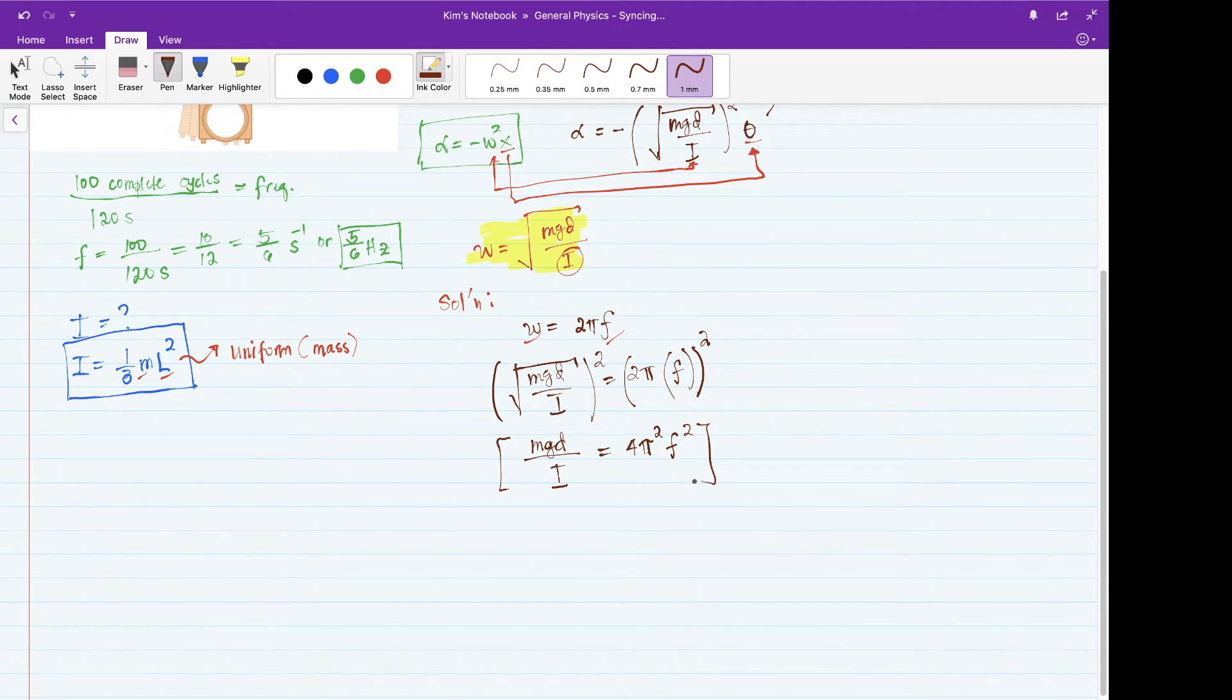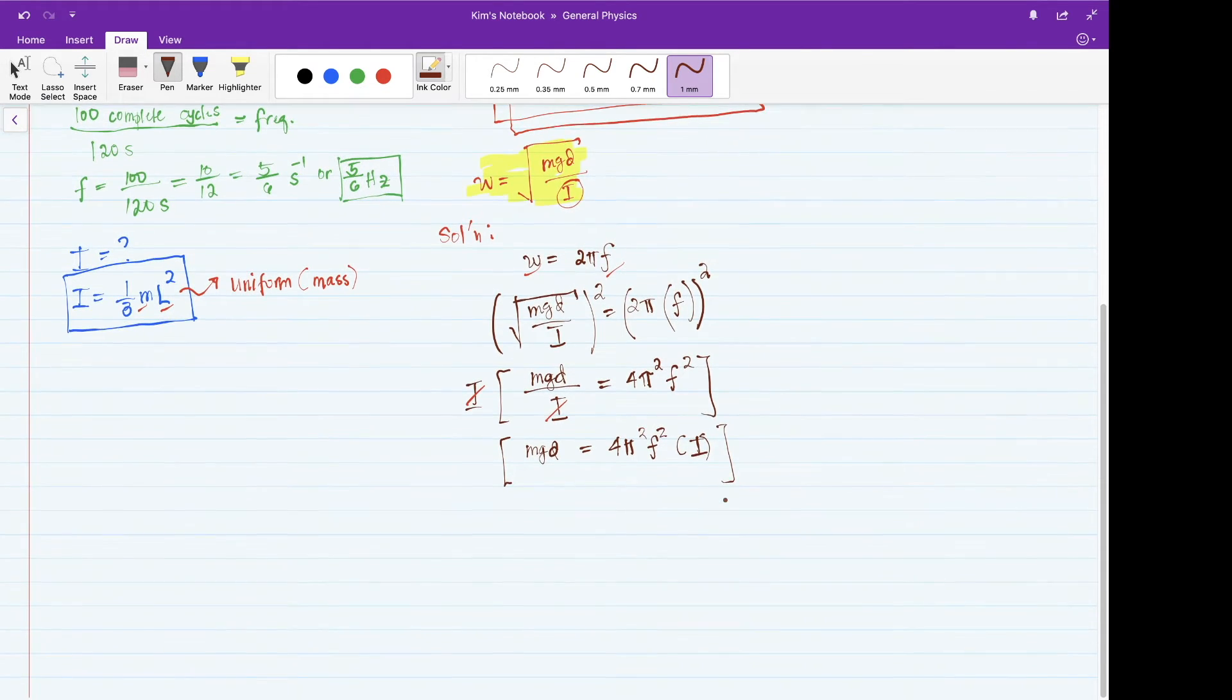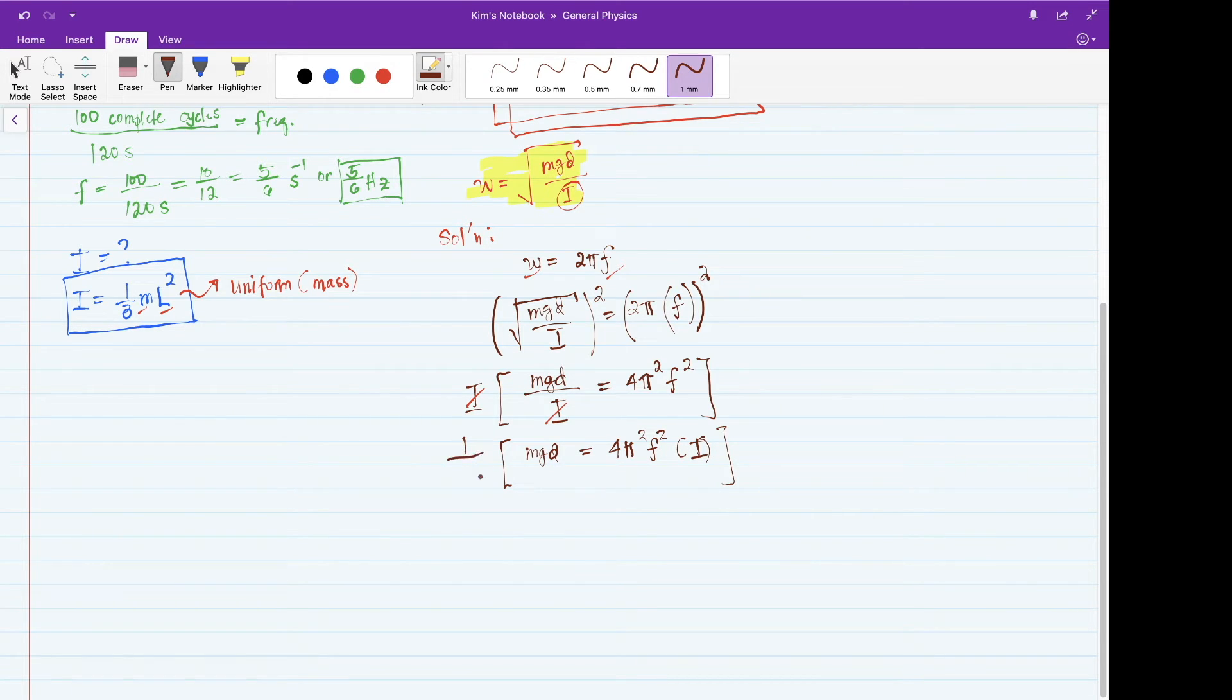After that, what you are going to do in this case since the I is in the denominator is you need to multiply both sides by I. When I do that on the left-hand side, the I will cancel out, so I am left with the expression MgD. When I multiply I on the other side of the equation, I'll have 4 pi squared frequency squared multiplied by I. I wanted to isolate I further such that it stands alone on either side of the equation. What I am going to do is multiply both sides by 1 over 4 pi squared F squared, so I am left with I equals MgD all over 4 pi squared frequency squared.